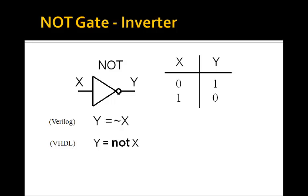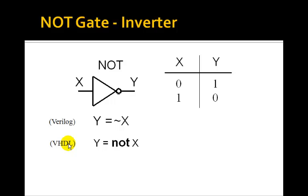We'll start with the NOT gate. The NOT gate has a single input and a single output. If we call the input X and the output Y, notice that if X is 0, Y is 1. If X is 1, Y is 0. It's just an inverter. In Verilog we write the logic equation Y equals NOT X, where we use this little tilde symbol to represent NOT. Whereas in VHDL you need to type out the entire word NOT if you're going to write Y equals NOT X.